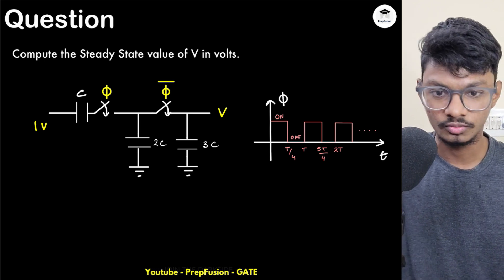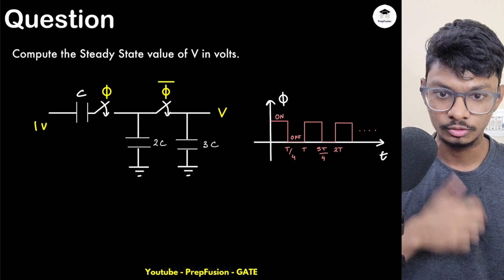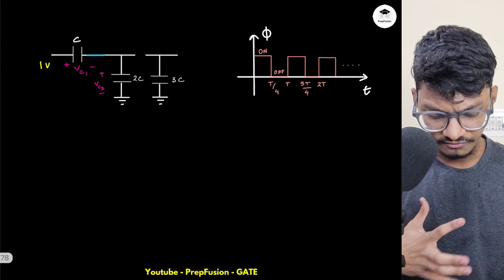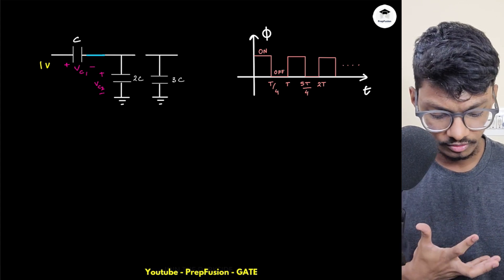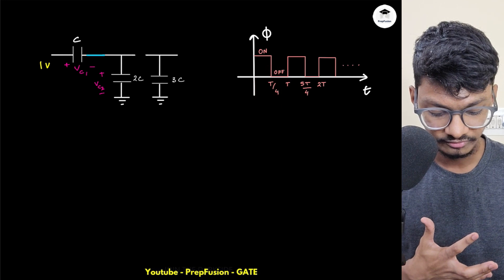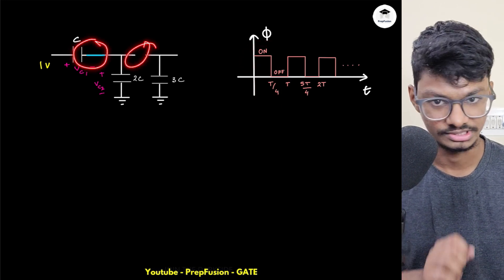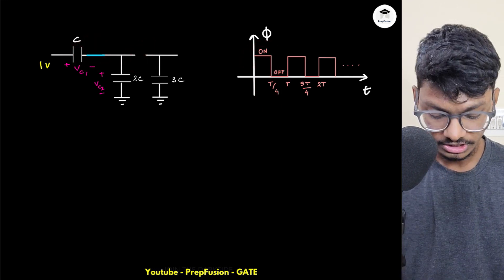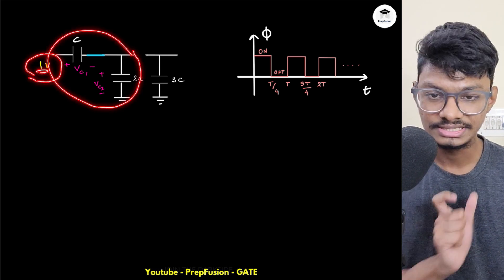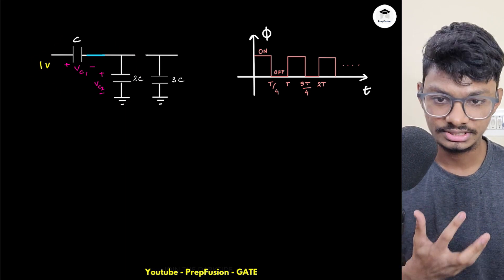If you haven't watched my previous video, make sure to watch it because I will use that same concept here. During time 0 to T/4, this switch is ON, the other is open. In that instant, the 1-volt source comes across capacitors C and 2C, and charge sharing will happen.